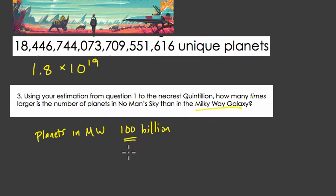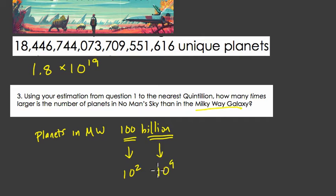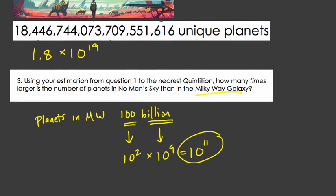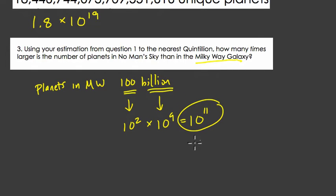Well, 100 billion is 100 times a billion. 100 is 10 squared, and billion is 10 to the 9th. So 100 billion is 10 squared times 10 to the 9th, which is 10 to the 11th — we add those exponents because our bases are equal. So this is the number of planets in the Milky Way.